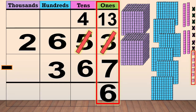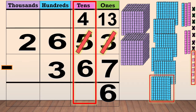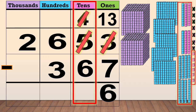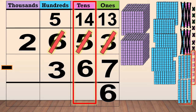Next, we subtract the tens: 4 minus 6. We cannot subtract 6 from 4, so we need to regroup 100 into 10 tens. Now we have 14 tens. We cross out the 4 and write 14 as new tens, and cross out the 6 and write 5 at the top. We subtract the tens: 14 minus 6 equals 8.